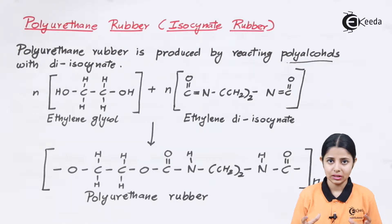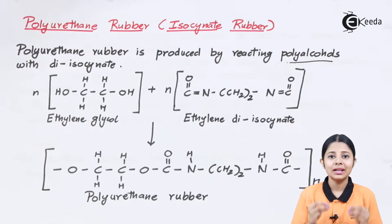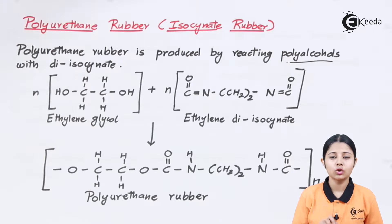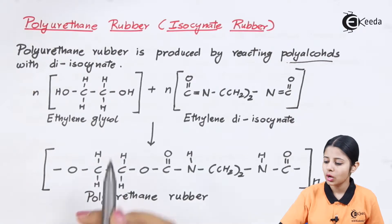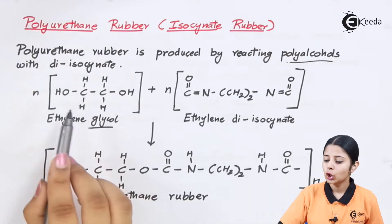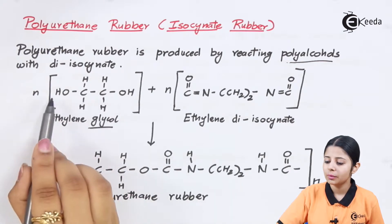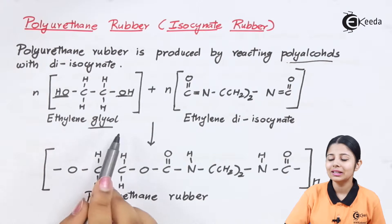Polyalcohols — poly means many, and alcohols means the OH group. So we have an alkane chain with many OH groups attached to it. When we say polyalcohol it should have two or more than two alcoholic groups. The simplest example is glycol. Glycol has two carbons, and on both carbons there are OH groups attached.